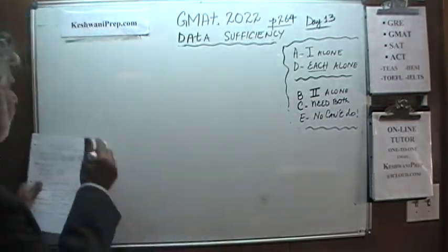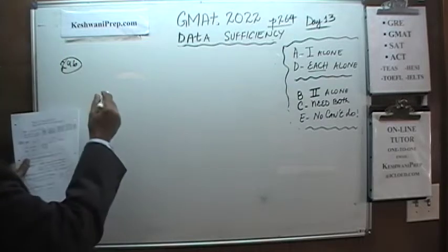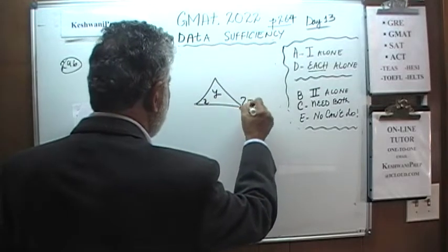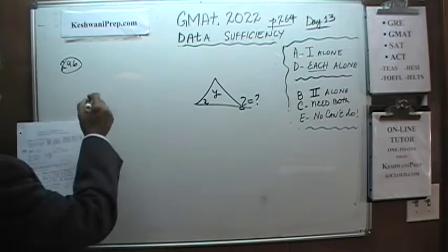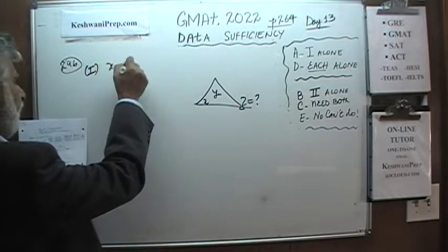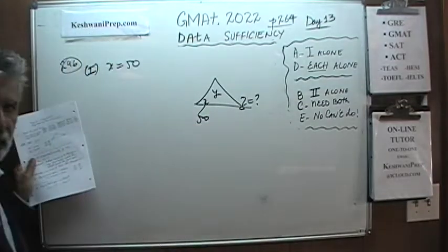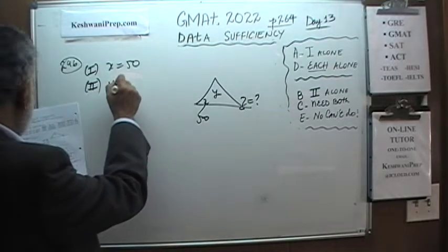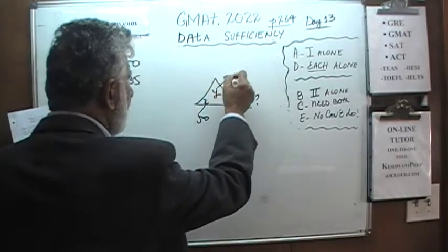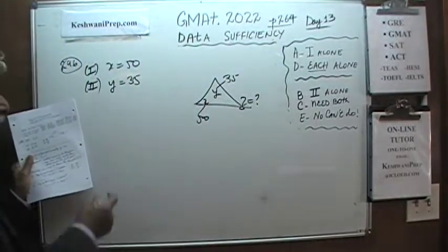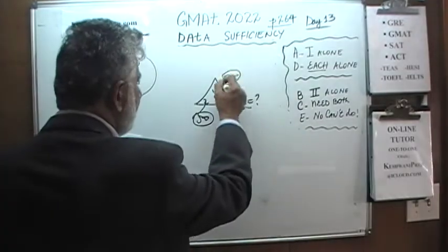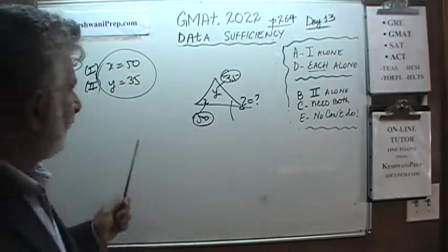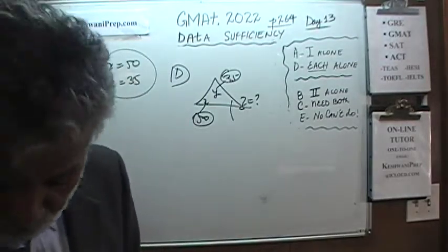The very first problem is 296, a very straightforward problem. We are given a picture with angle X, angle Y, and the question is how much is Z. The first statement tells us that X equals 50 — simply knowing X equals 50 does not enable us to figure out Z. The second statement tells us Y is 35. Knowing Y alone without X, we cannot figure out Z. But when we put the two statements together — X is 50 and Y is 35 — we can figure out the remaining angle, and Z is simply 180 minus that angle. The answer is D.